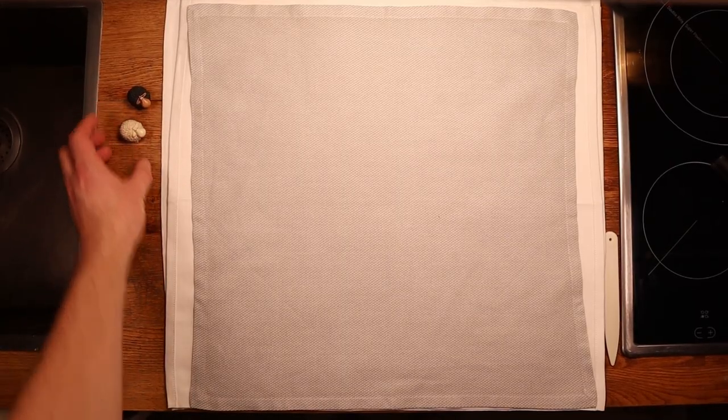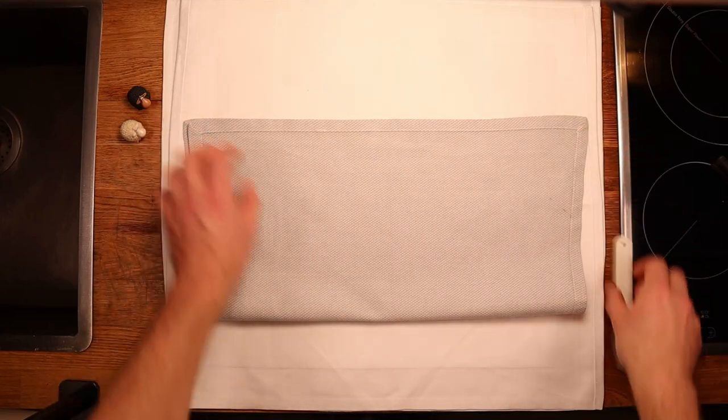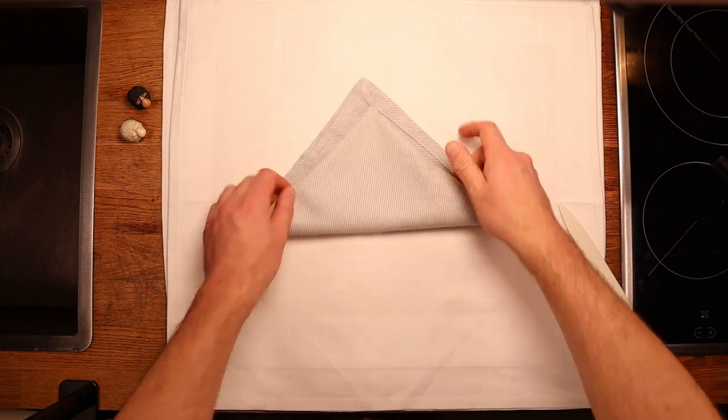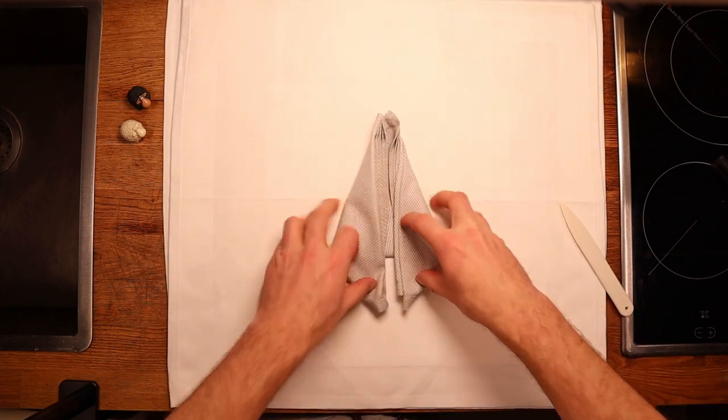For this fold, I'm using a 50 by 50 damask table napkin made from 100% cotton in a solid white color in medium weight. However, you can use other cloth as well.